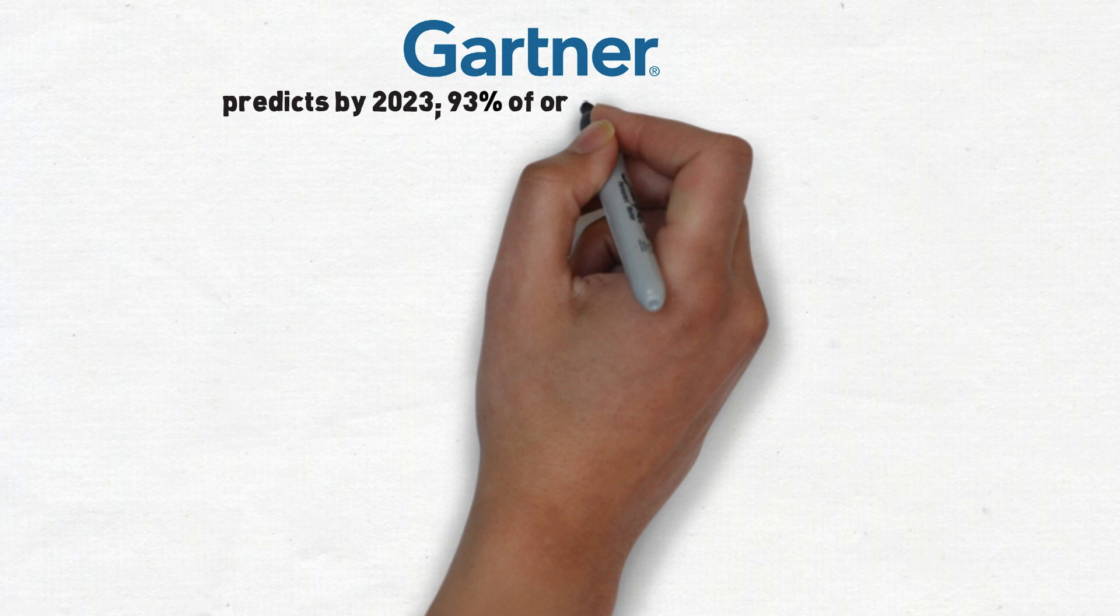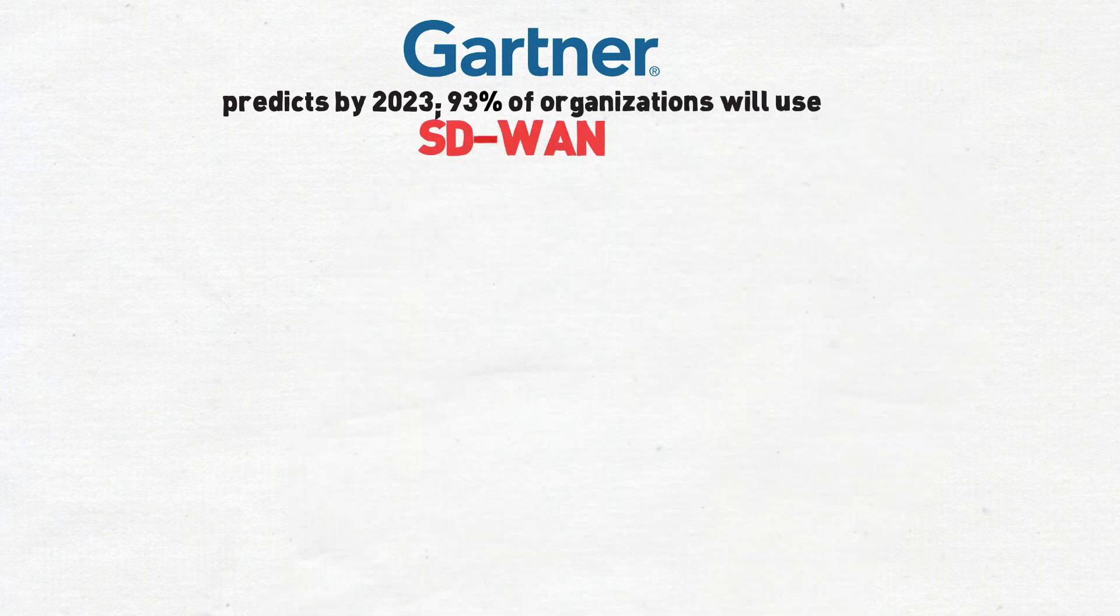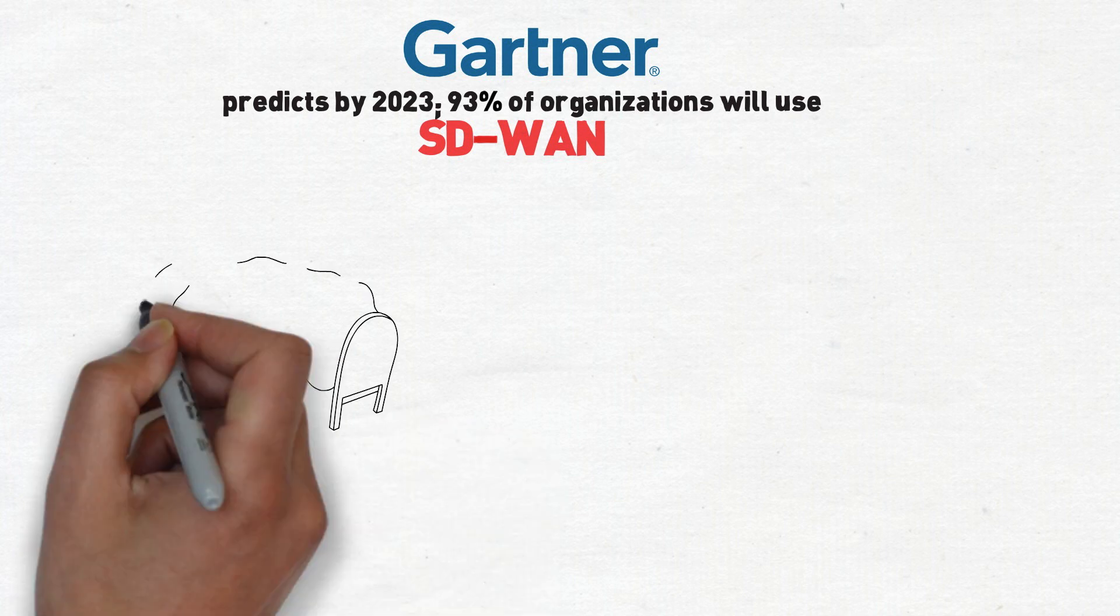Gartner predicts that by 2023, 93% of organizations will be doing some form of SD-WAN for the WAN edge. And the reasons for this disruption are obvious.